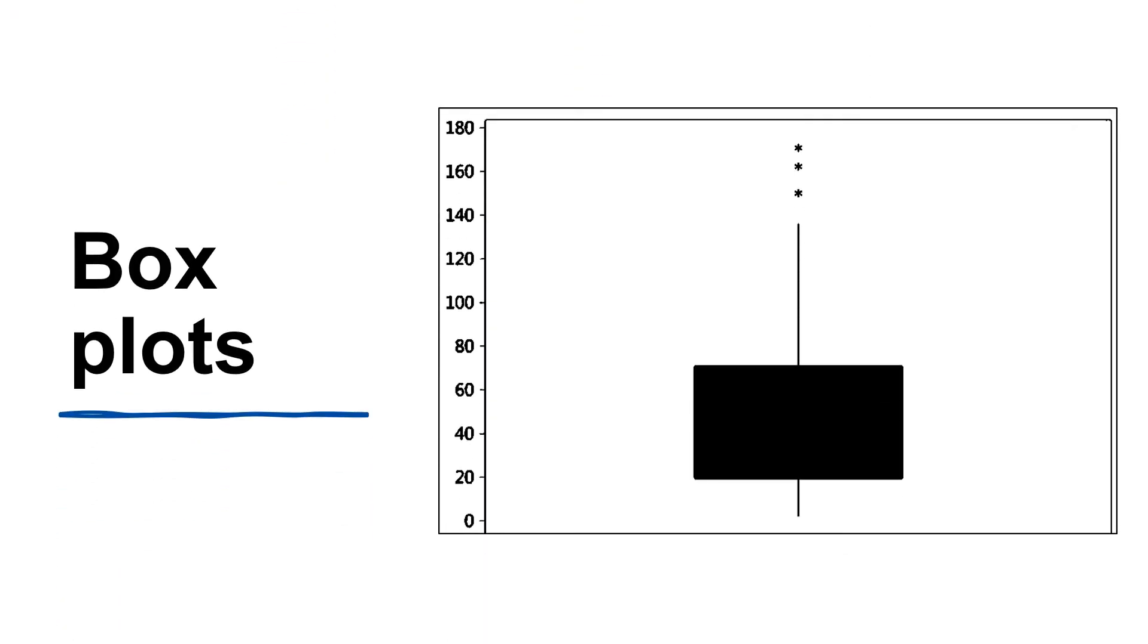Box plots help us summarize the distribution of our data. For example, consider this box plot of diameter of circles. The median value is around 40 - that is, half of the diameters are less than 40 and half of the diameters are longer than 40.